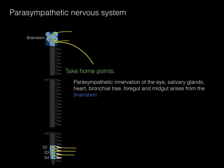Some take-home points: parasympathetic innervation of the eye, salivary glands, heart, bronchial tree, foregut, and midgut arises from the brainstem. The parasympathetic innervation from the brainstem comes via cranial nerve 3, cranial nerve 7, cranial nerve 9, and cranial nerve 10.